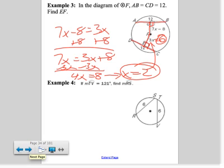Example 4 says if the measure of arc TV is 121, find the measure of arc RS. These chords are congruent, so we have a theorem that tells us if the chords are congruent, then the arcs they create must also be congruent.